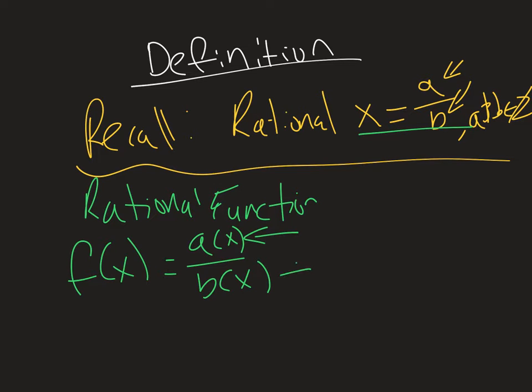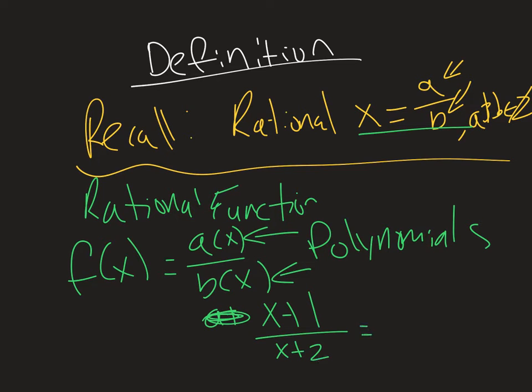For example, we could have (x + 1) over (x + 2). This could be a rational function. This is different than other polynomial functions we've talked about in the past because now we have a ratio of two polynomials.